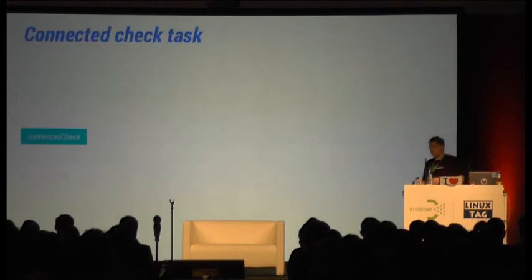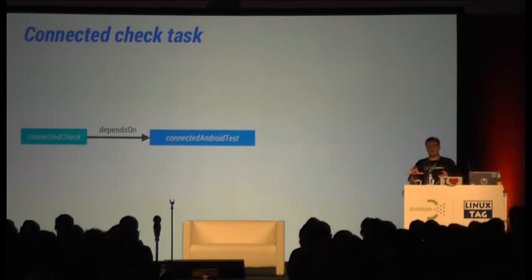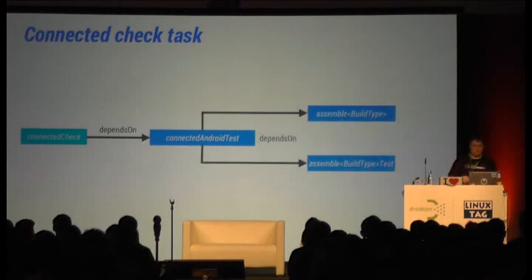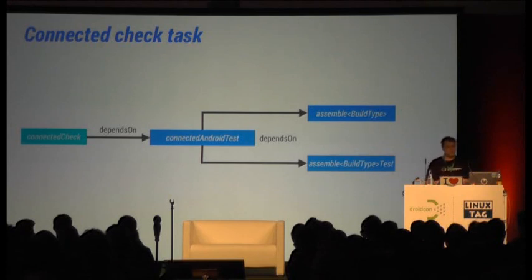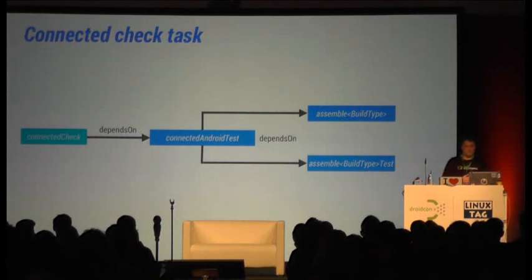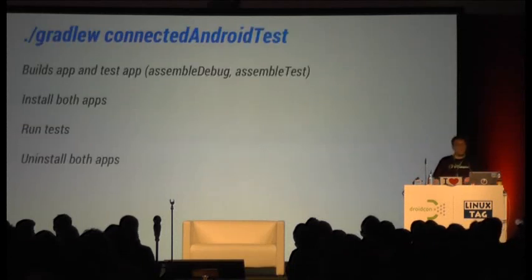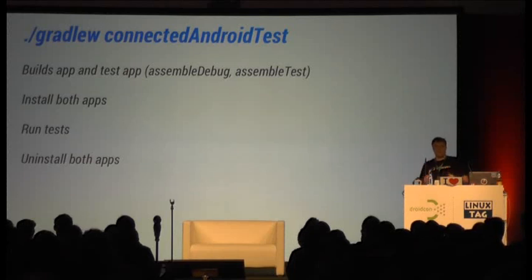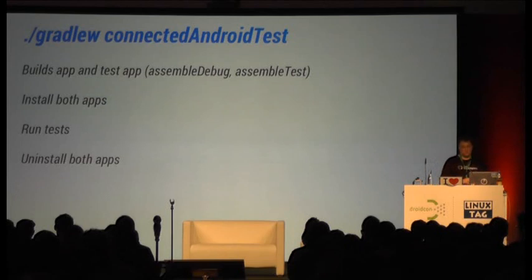How does the connectedCheck task actually work? In Gradle, tasks depend on other tasks — that's how you define which tasks to run. The connectedCheck task depends on the connectedAndroidTest task, and of course that task depends on the assembleBuildType and assembleBuildTypeTest tasks to build your APKs for testing. If we have a closer look at the connectedAndroidTest task, it does everything we need: it builds both APKs, installs both on a device, runs the tests, and uninstalls both after that.